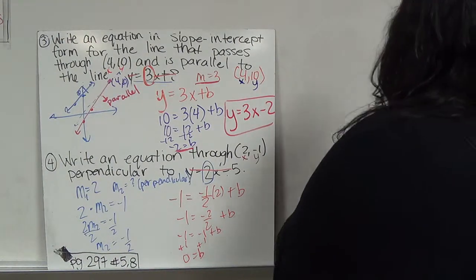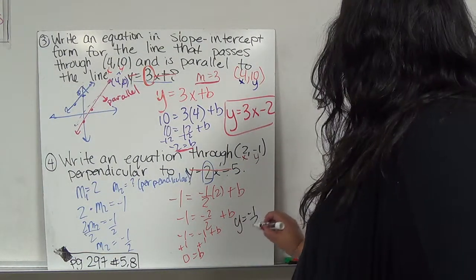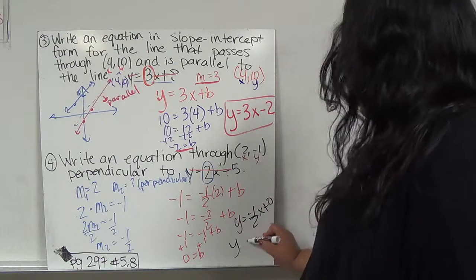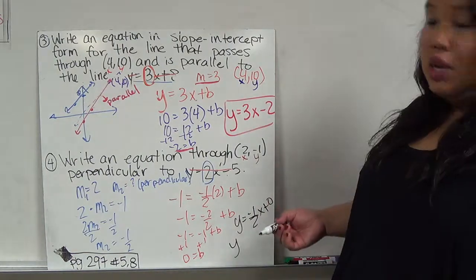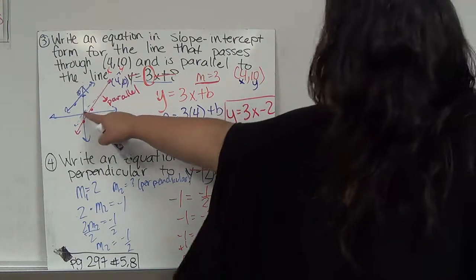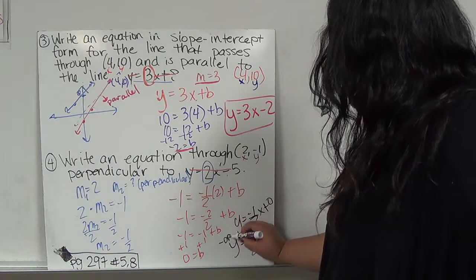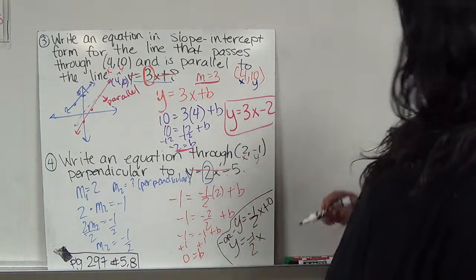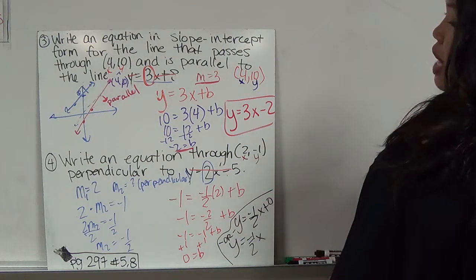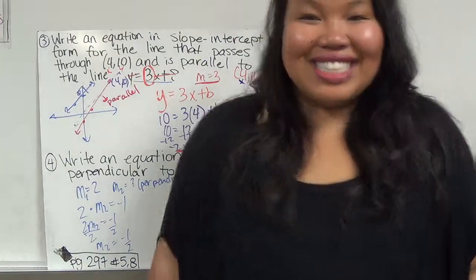I can write this equation one of two ways. I can do y equals my slope, negative 1 half x, plus 0. Or I don't have to even write the 0. If there is no b, I'm assuming that it starts at the origin. So y equals negative 1 half x. This is an or situation. I just have to have one or the other. So go ahead and write this down. Try page 297, number 5 and 8, and I will see you in class.